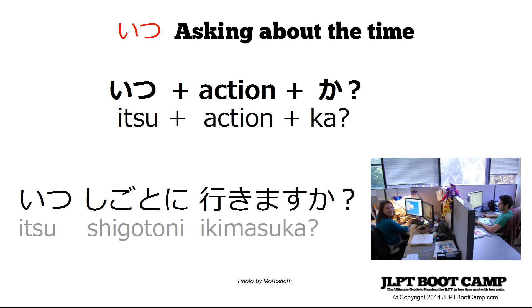For example, you can ask 'Itsu shigoto ni ikimasu ka?' Depending on the situation, this could mean 'when do you go to work?' generally, or 'when are you going to go to work?' if asked in the morning. 'Shigoto ni' with a verb of motion like 'ikimasu' or 'kimasu' is a structure meaning 'go and do this thing.' Another example: 'kaimono ni ikimasu' — 'kaimono' is shopping — means 'go shopping.'